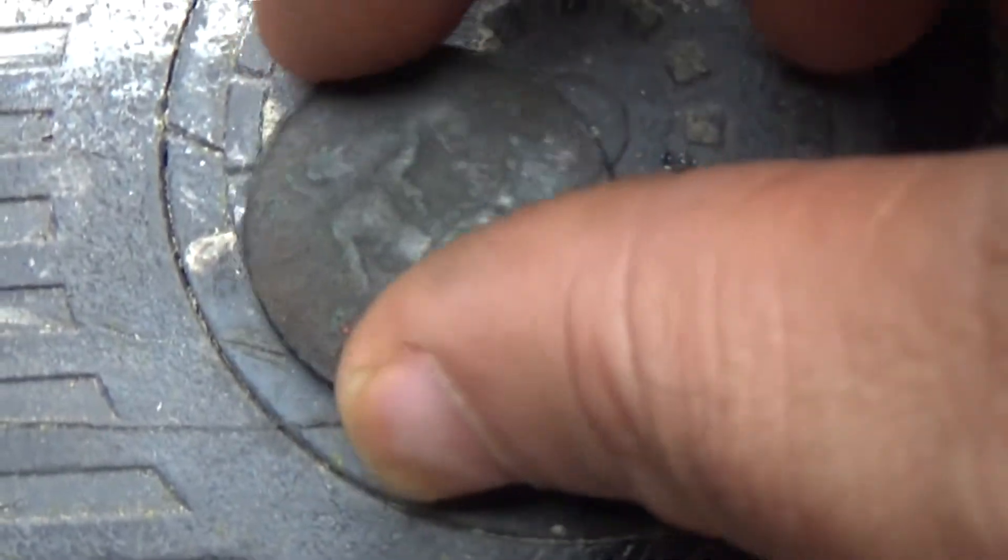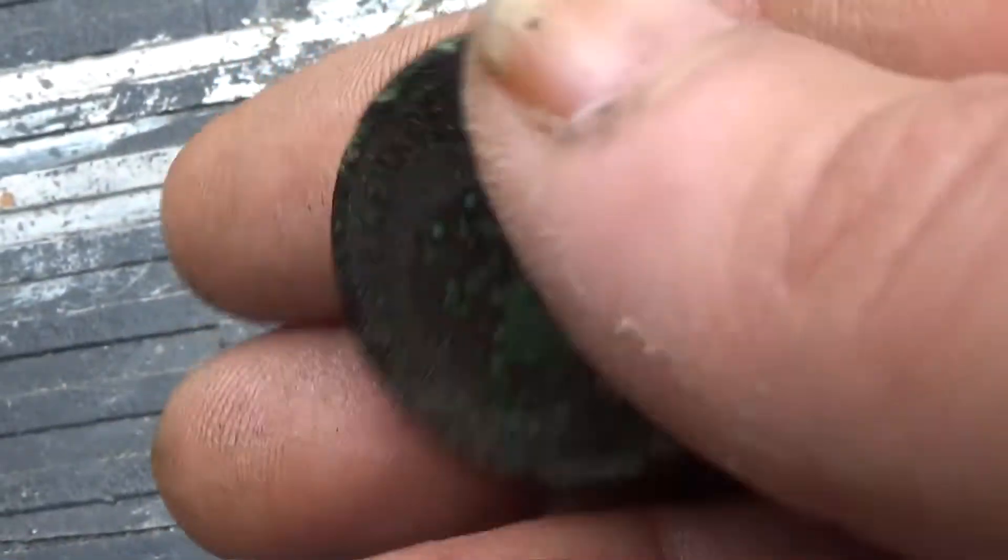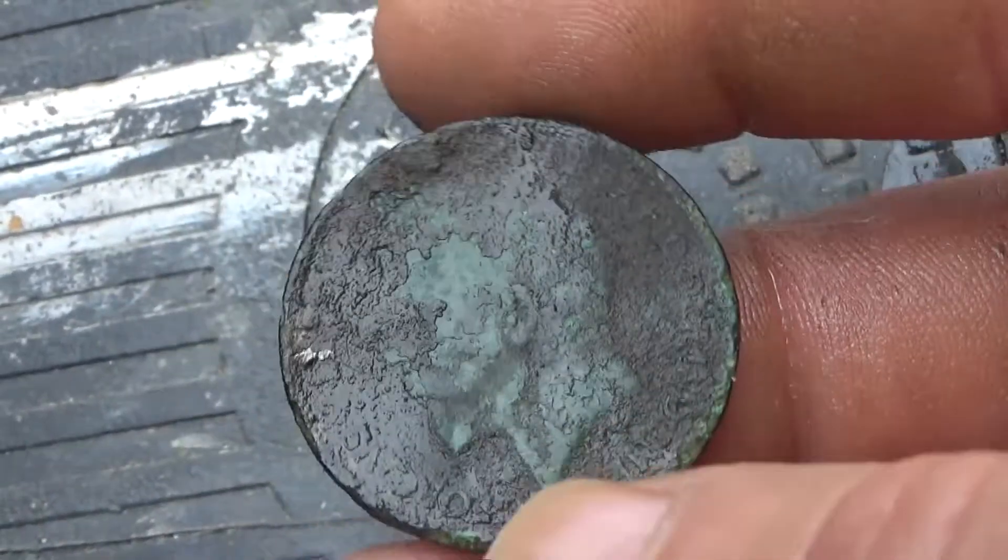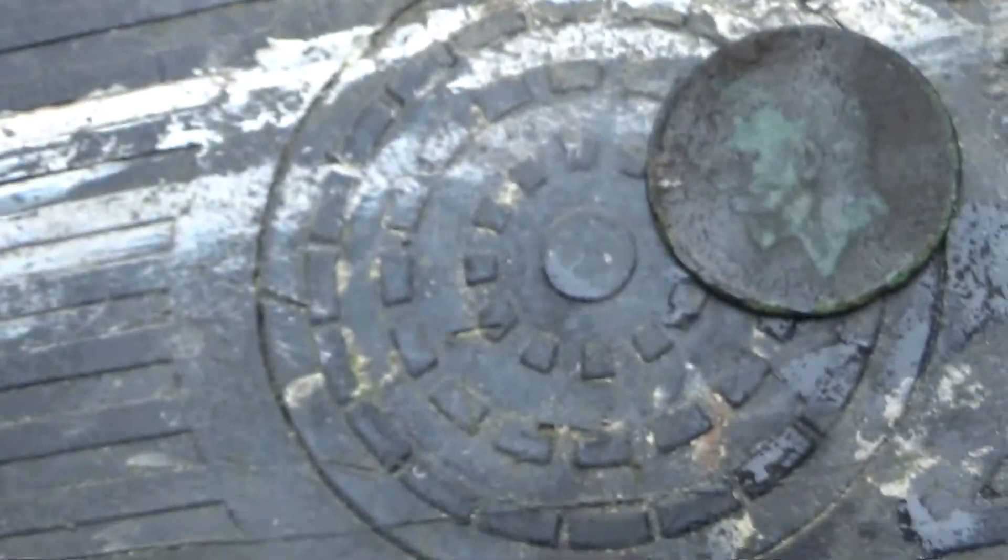This is the coin we're gonna try, an old Victorian coin. You can see the portrait, but let's see if we can get anything better. So, okay, let's try this, put this in.